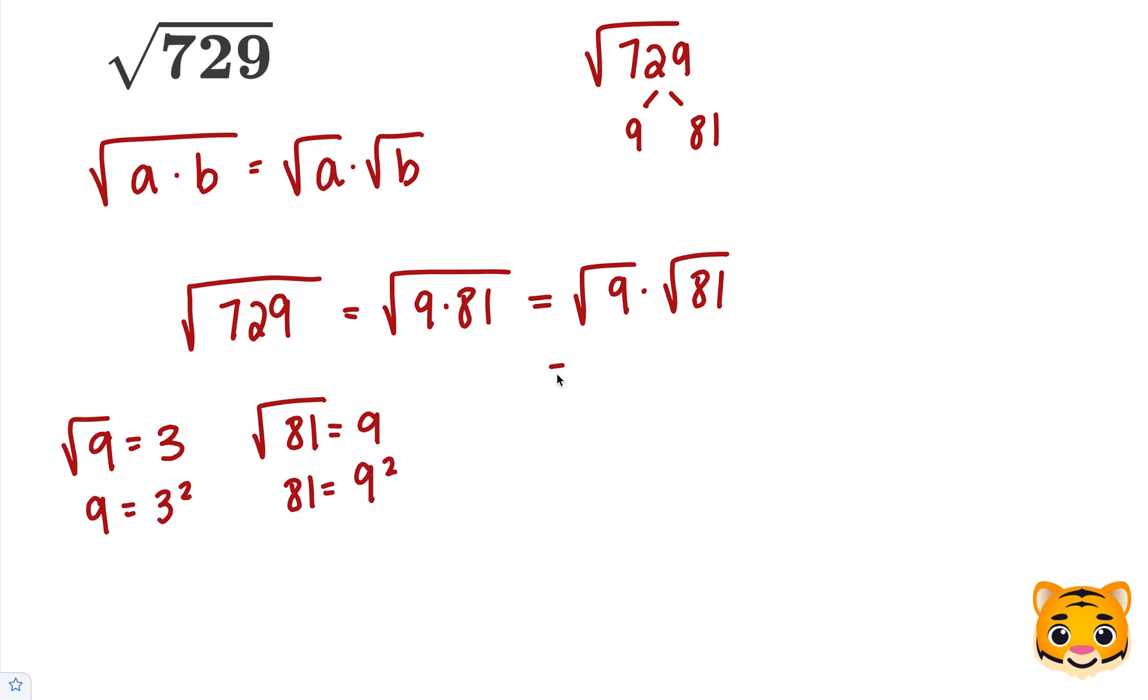So we can rewrite this as 3 times 9 because the square root of 9 is 3 and the square root of 81 is 9.